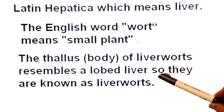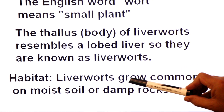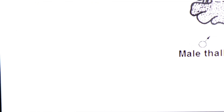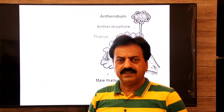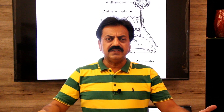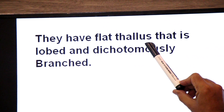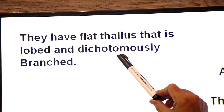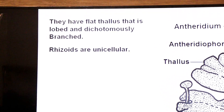That is why they are called liverworts — the thallus body of liverworts resembles the lobed liver of an animal. Their habitat is moist soil and damp, wet places. The dominant generation is the gametophyte, which is long-lived, photosynthetic, and free-living. They have a flat thallus — a body not divided into root, stem, and leaf — that is lobed and dichotomously branched. Rhizoids are unicellular.